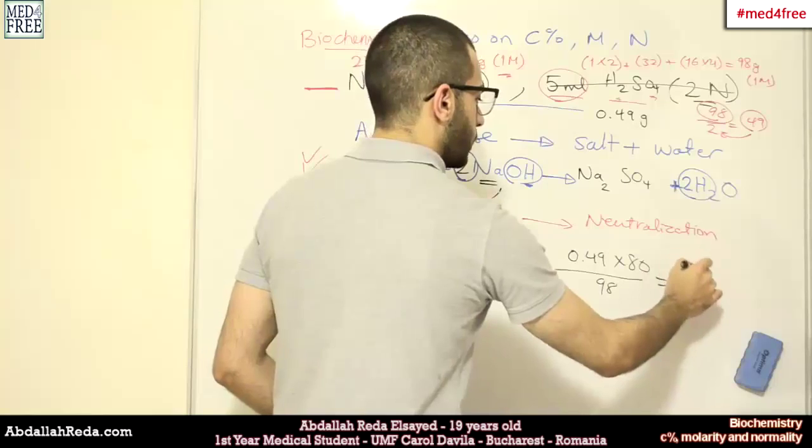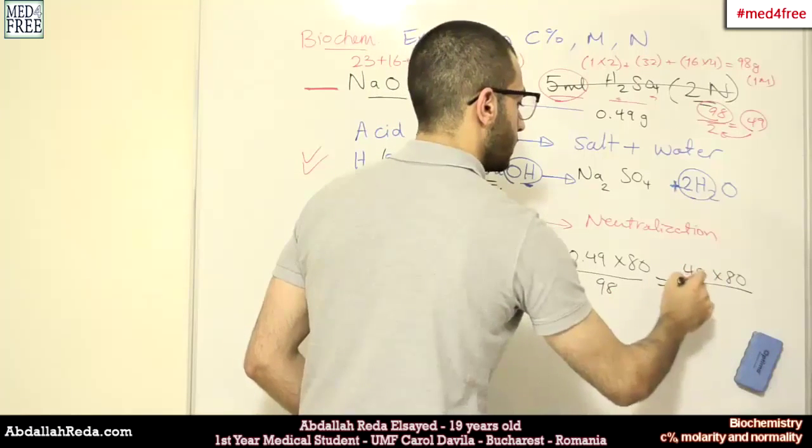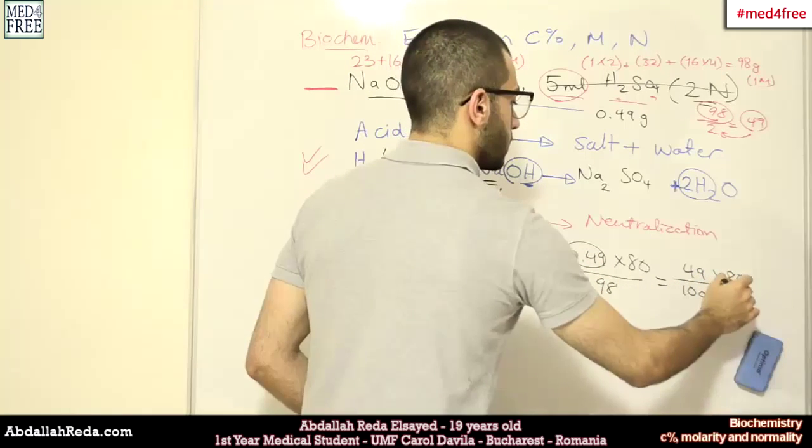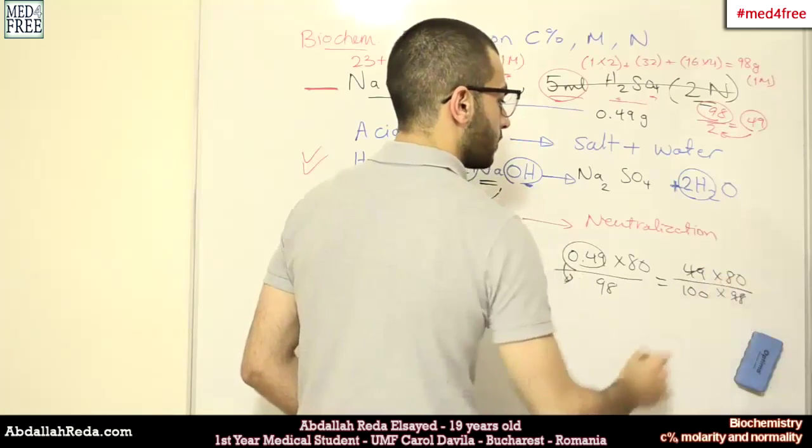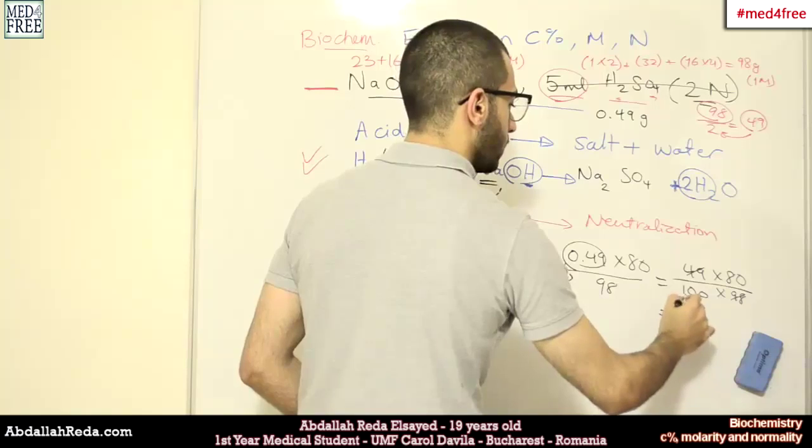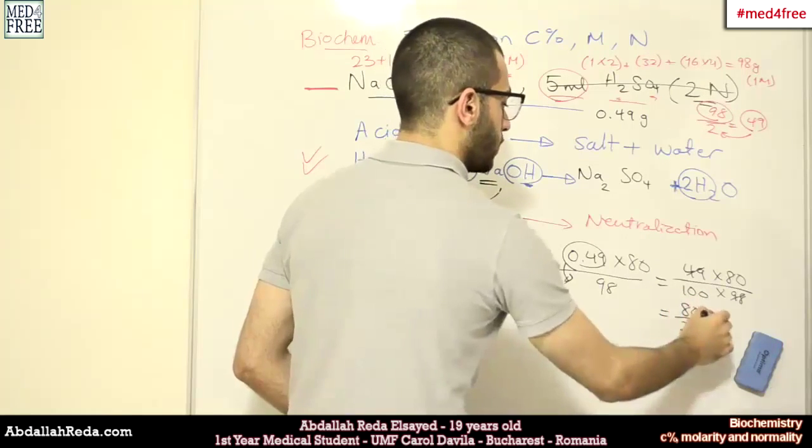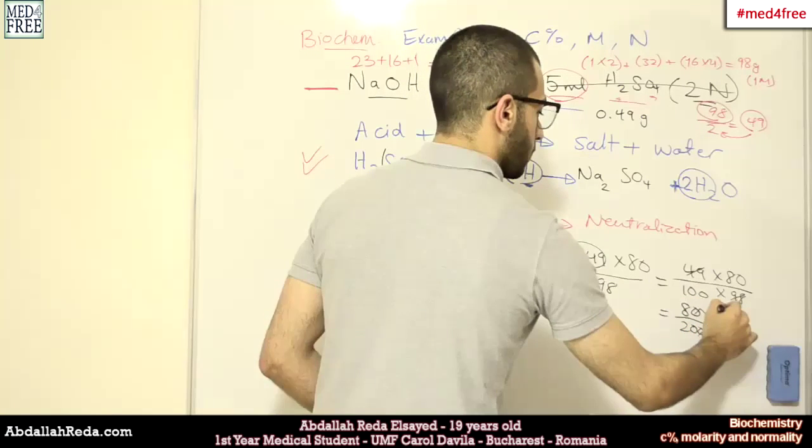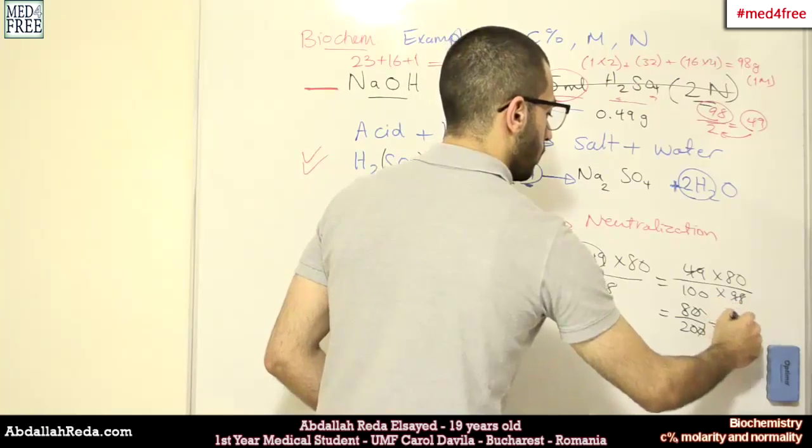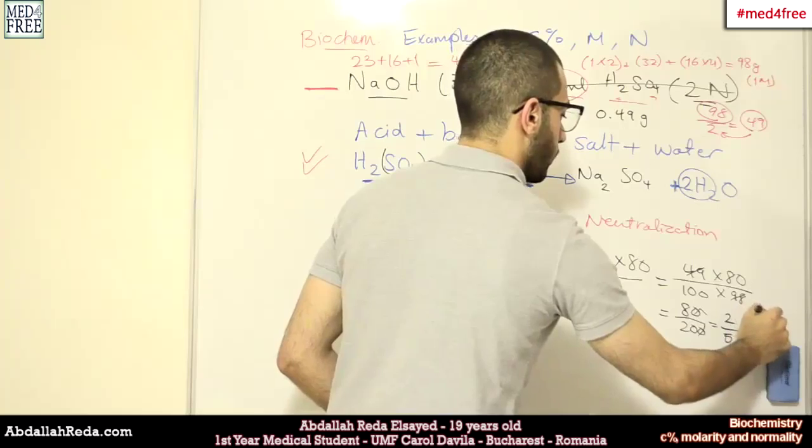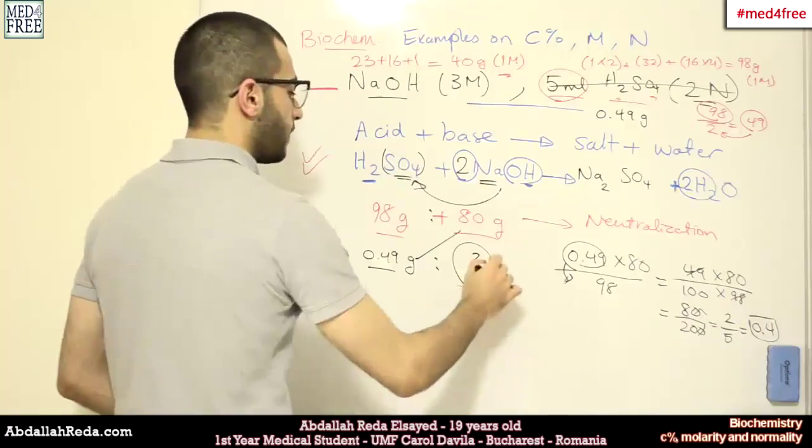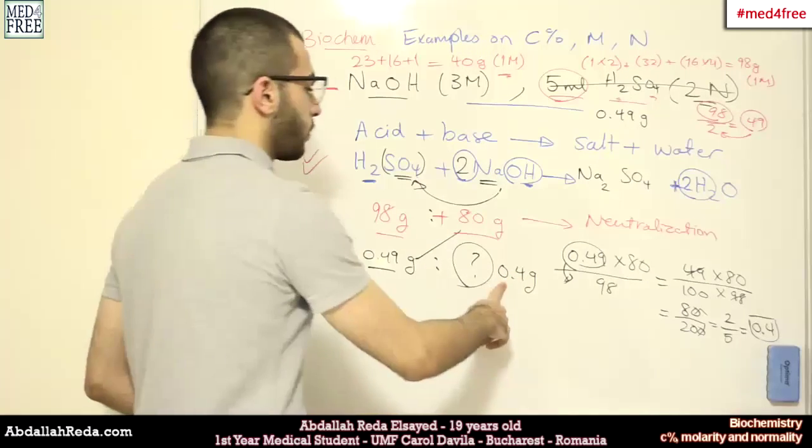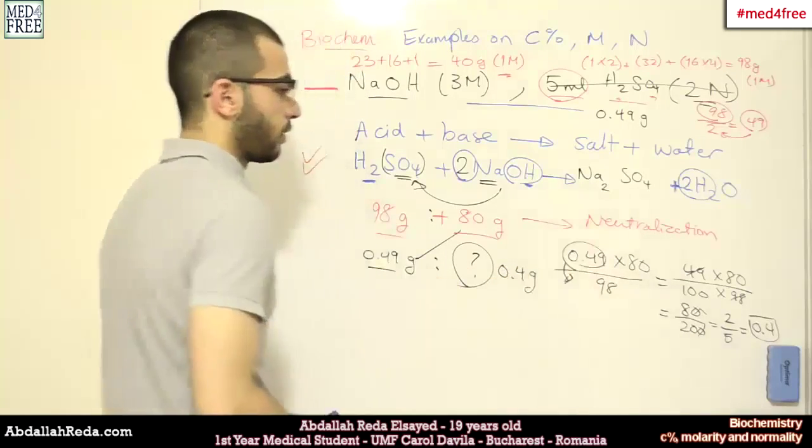In order for this reaction to be done sufficiently, we will again, cross-multiply to know the amount of grams that we have here. So 0.49 multiplied by 80 and divided by 98. This is like 49 multiplied by 80, and we have 100 here. I just dropped down the decimal. And this is multiplied by 98. It's actually will be 80 multiplied by 200, and we have here 2 over 5, which is 0.4. So we will have 0.4 grams. So 0.49 grams will need 0.4 grams in order for the neutralization to happen.